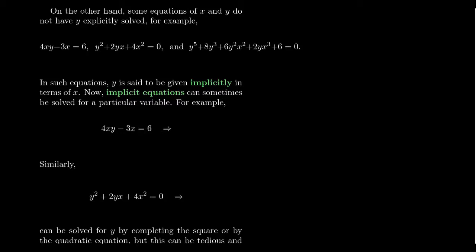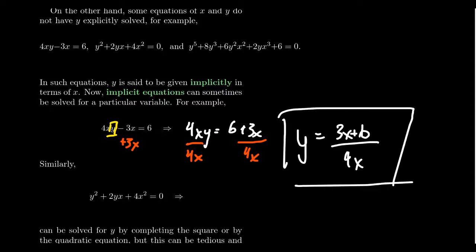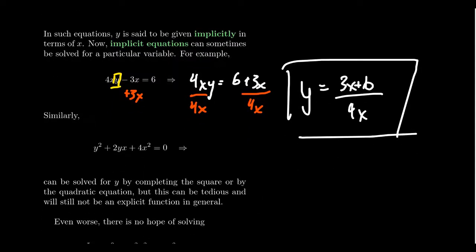If you take 4xy minus 3x equals 6, it wouldn't be too difficult to solve for y right there. Add 3x to both sides and you get 4xy equals 6 plus 3x. Divide both sides by 4x, and you end up with y equals 3x plus 6 all over 4x. We're able to solve for y — y equals this expression. So even though we had an implicit equation to start with, we were able to solve for y to get an explicit equation, where y is explicitly defined in terms of x.